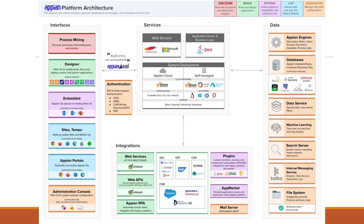For integration, whenever we need to connect something with Appian — to get or send data — we can integrate Appian with other external systems. There are many options like web services, Appian APIs, Appian RPA, ERP, CRM, Salesforce, and more. We also have the app market where we can download plugins, which we'll cover in later videos.